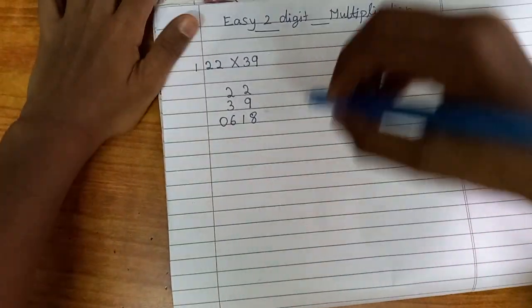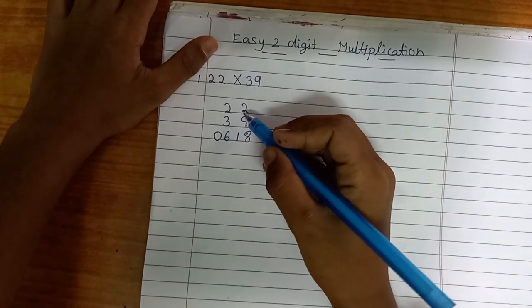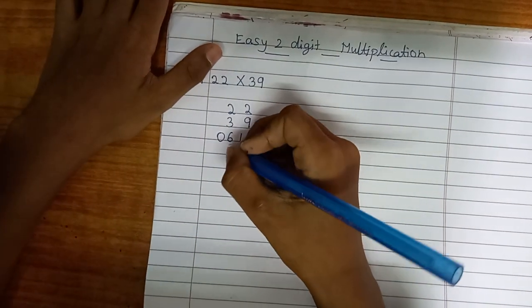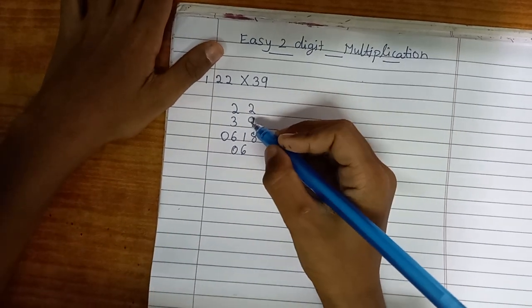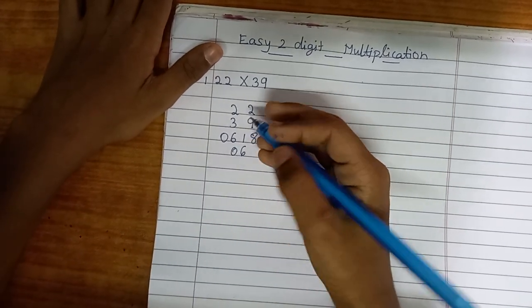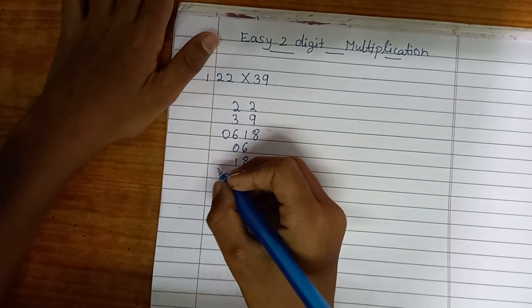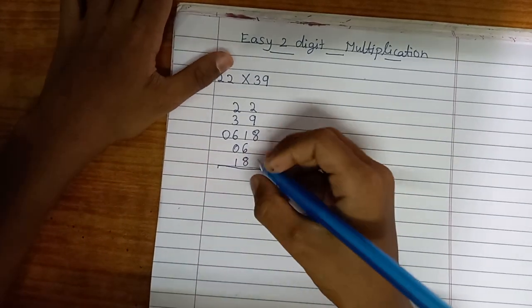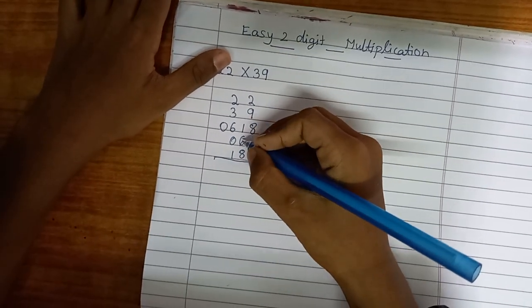Now you have to see 3 multiplied by 2, which is 6. Let's write 06. And 9 multiplied by 2, which is 18. Now I'm going to add them all. 8 is 8, 7 plus 8 is 15.